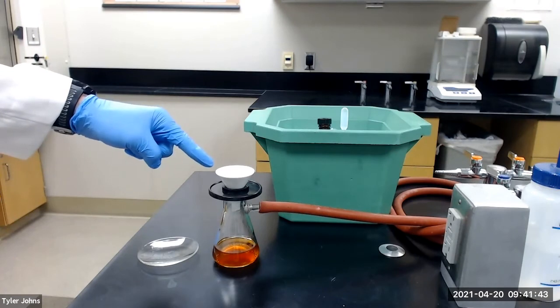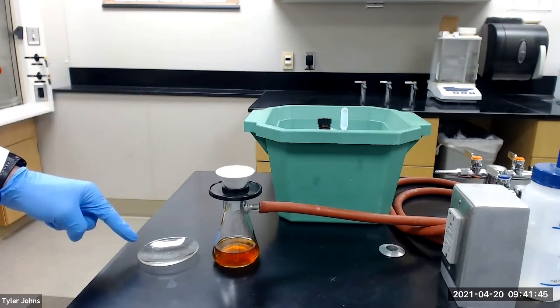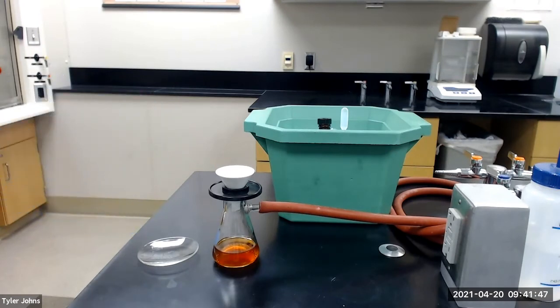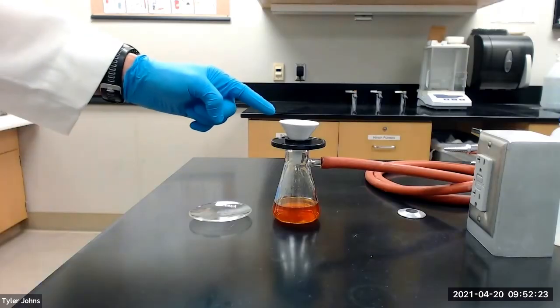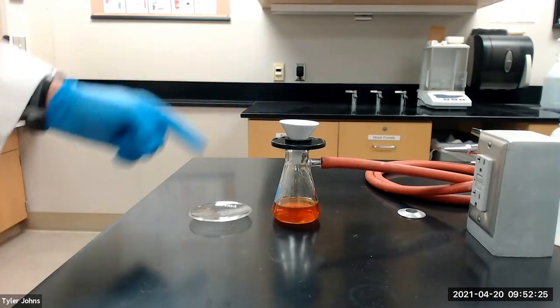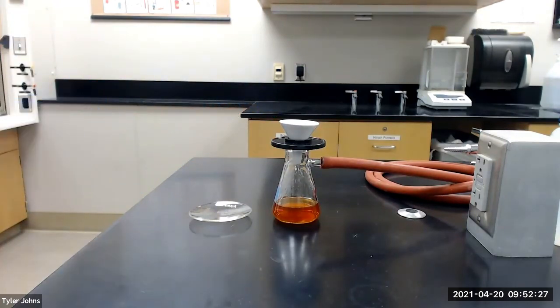While our crystals continue to dry, we will next pre-weigh a watch glass. The mass of the pre-weighed watch glass is 35.4472 grams. We will next collect the substituted chalcone on the pre-weighed watch glass and dry in an 80 degree Celsius oven for 10 minutes.